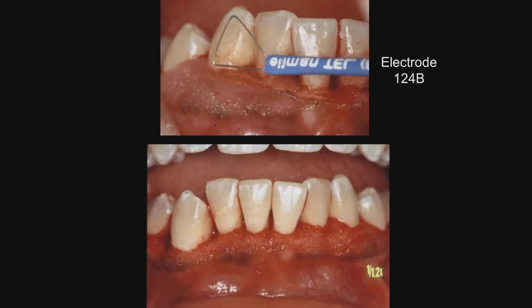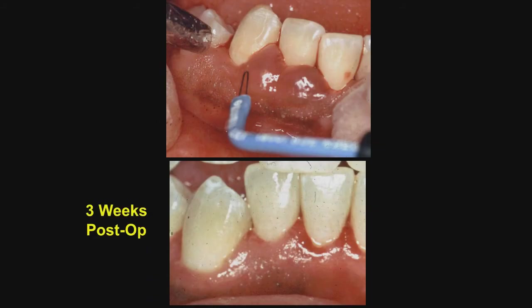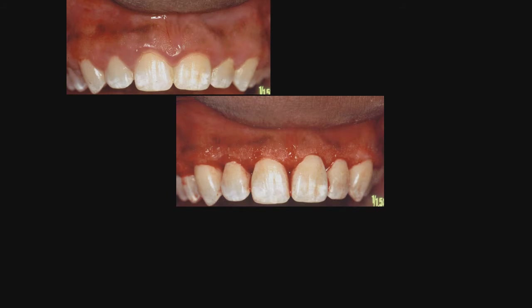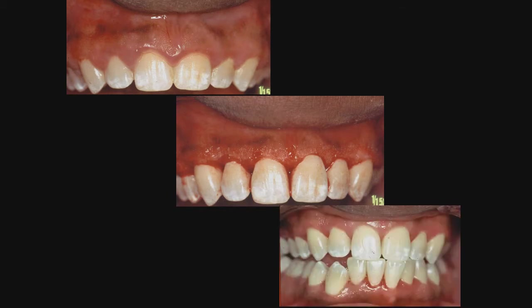This is the triangular tip, the 124, and you can see that I placed the bevel — you will notice that there is no char layer, there is no bleeding, and this is going to heal very nicely. The three-week post-op on this we see on the bottom. This is the pre-op, same patient on the maxillary arch, post-radiosurgery, and the post-op on both the maxillary and the mandibular arch.